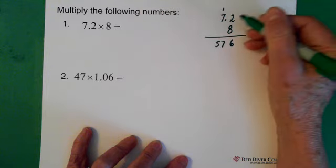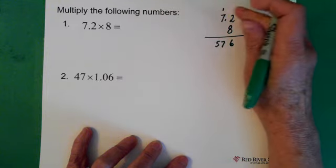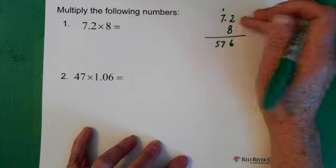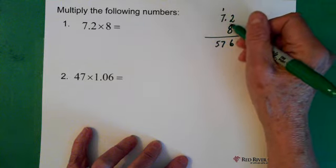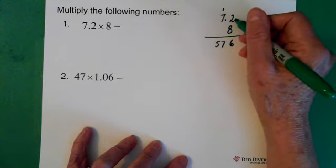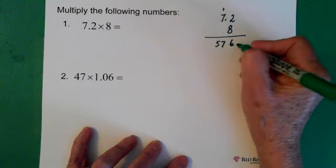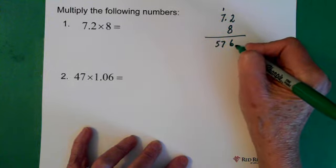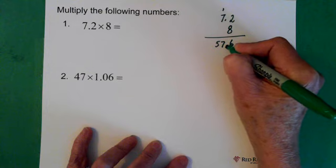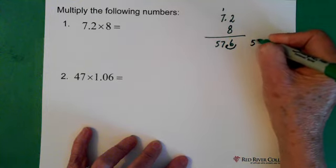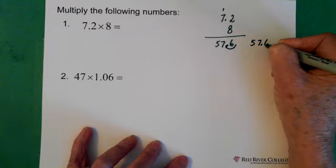Now what we do is we count the number of decimals in these numbers, the number of decimal places I should say. And we can see that we have 1 decimal place here. So then what we do is we give 1 decimal place to our answer. So then this answer becomes 57.6.